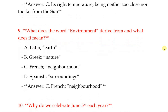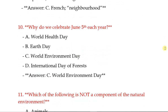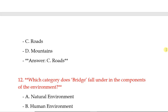What does the word 'environment' derive from and what does it mean? Environment is derived from a French word, meaning neighborhood. Why do we celebrate June 5th each year? World Environment Day. Which of the following is not a component of the natural environment? Correct answer: Roads.